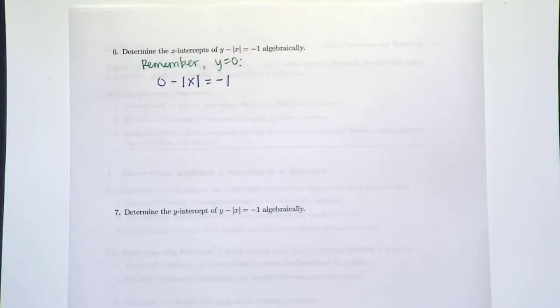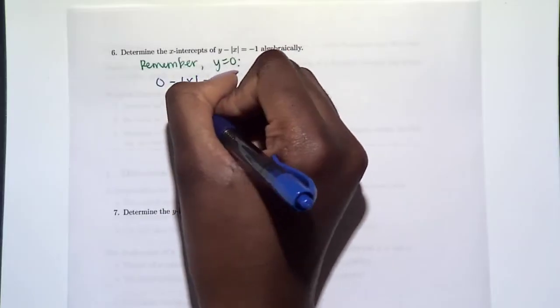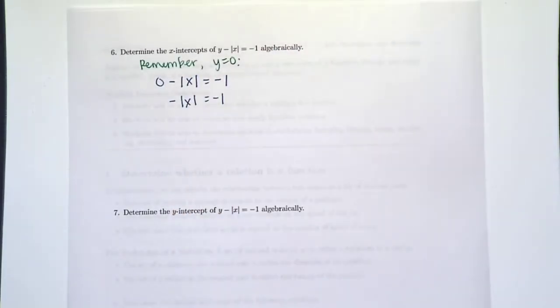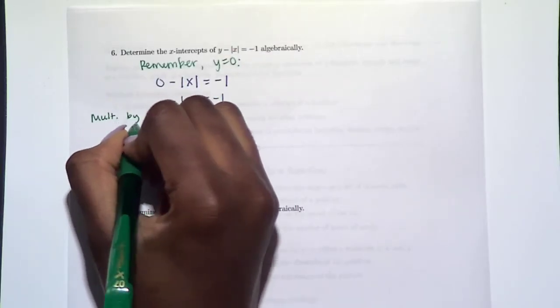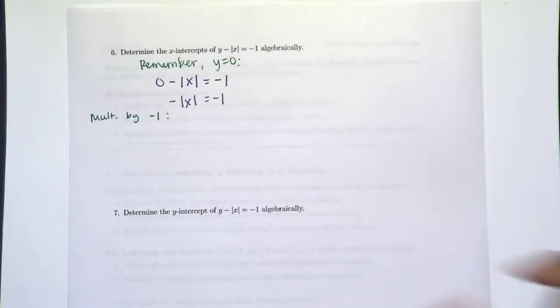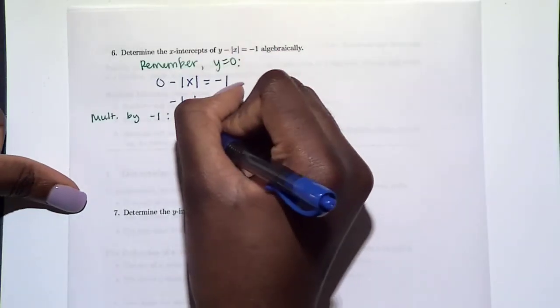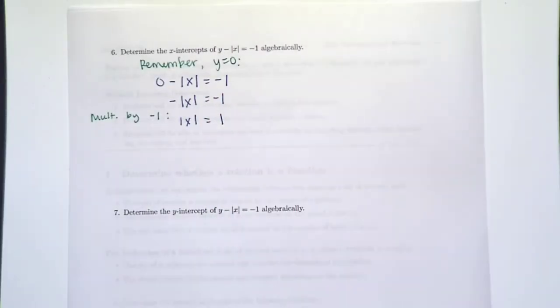So here, let's solve for what x is going to be. We already know that y is zero. So how do we solve for x? Well, we have a zero right here, so we know that this is just -|x| = -1. How do we solve for x here? Well, we have a negative in front; let's get rid of that. We could either multiply or divide by negative one. Let's say we will multiply by negative one on both sides.